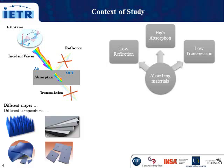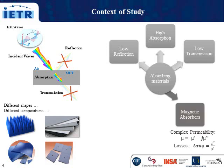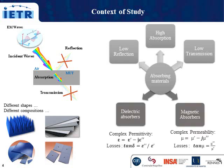The form and composition of the absorbers are various and depend on the target application. For the composition, we can find magnetic or dielectric absorbers. In our case, we deal with this last type of absorbers, and we are looking for low permittivity in order to reduce the reflection, and high dielectric losses for high absorption and low transmission.